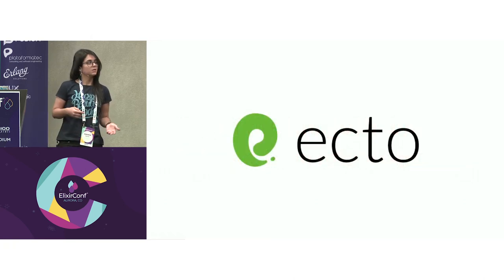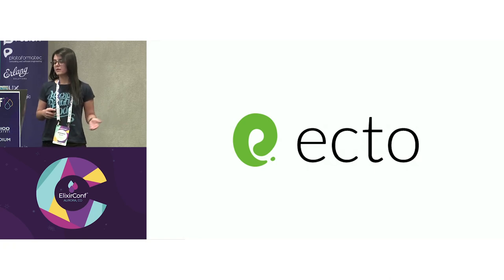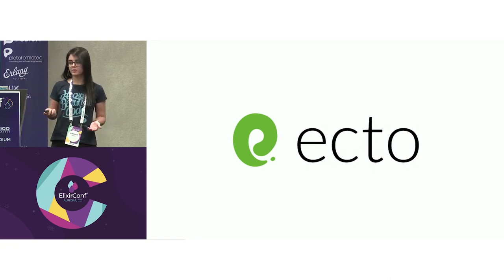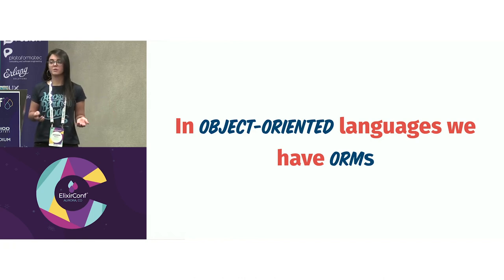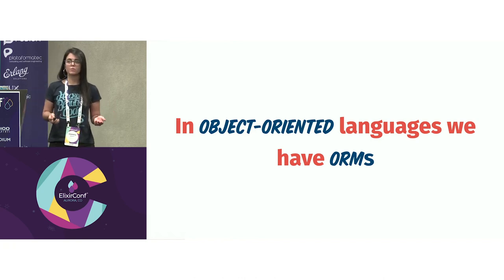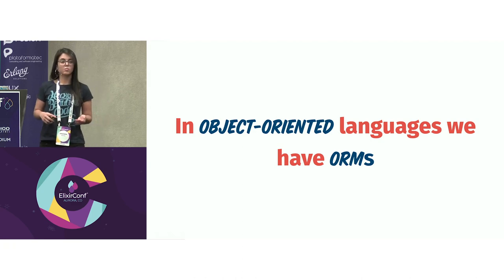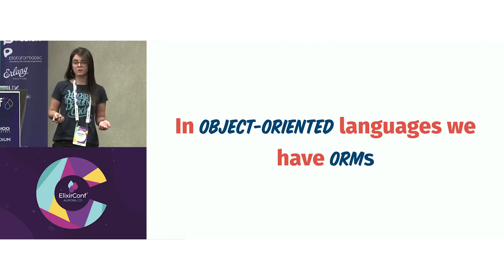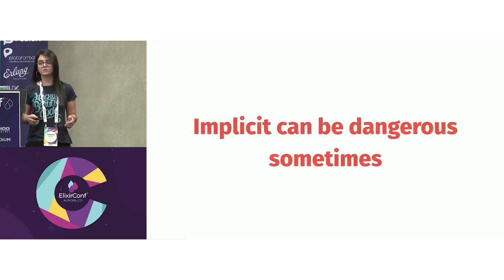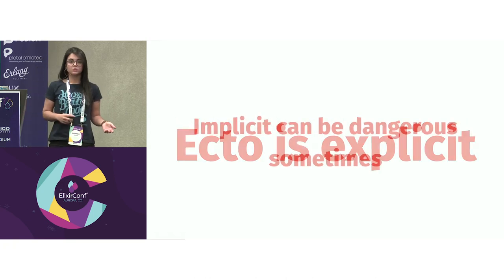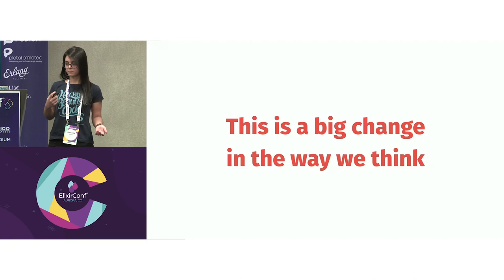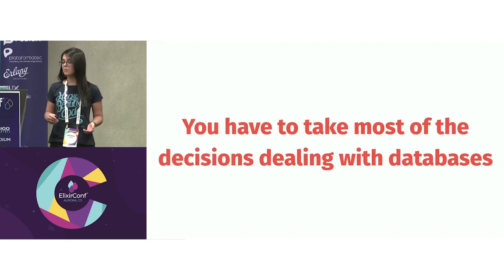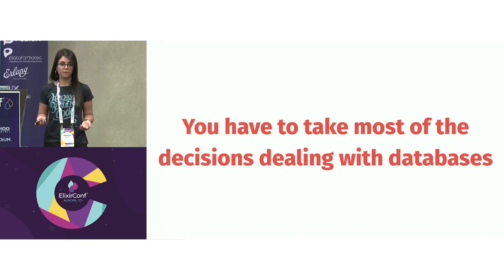There's this library in Elixir called Ecto. It's a library to map and validate data and access databases. In object-oriented languages, we have ORMs, and they are great at solving many problems we used to have when dealing with procedures, but they are also more implicit in the way they control our queries. And implicitness can be dangerous sometimes. Ecto, on the other hand, is explicit. This is a big change in the way we think — you have to take most of the decisions when dealing with databases now.